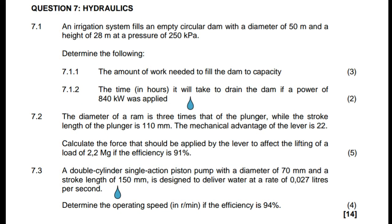The question reads as follows: an irrigation system fills an empty circular dam with a diameter of 50 meters and a height of 28 meters at a pressure of 250 kilopascals. Determine: (a) the amount of work needed to fill the dam to capacity, and (b) the time in hours it takes to drain the dam if a power of 840 kilowatts was applied.